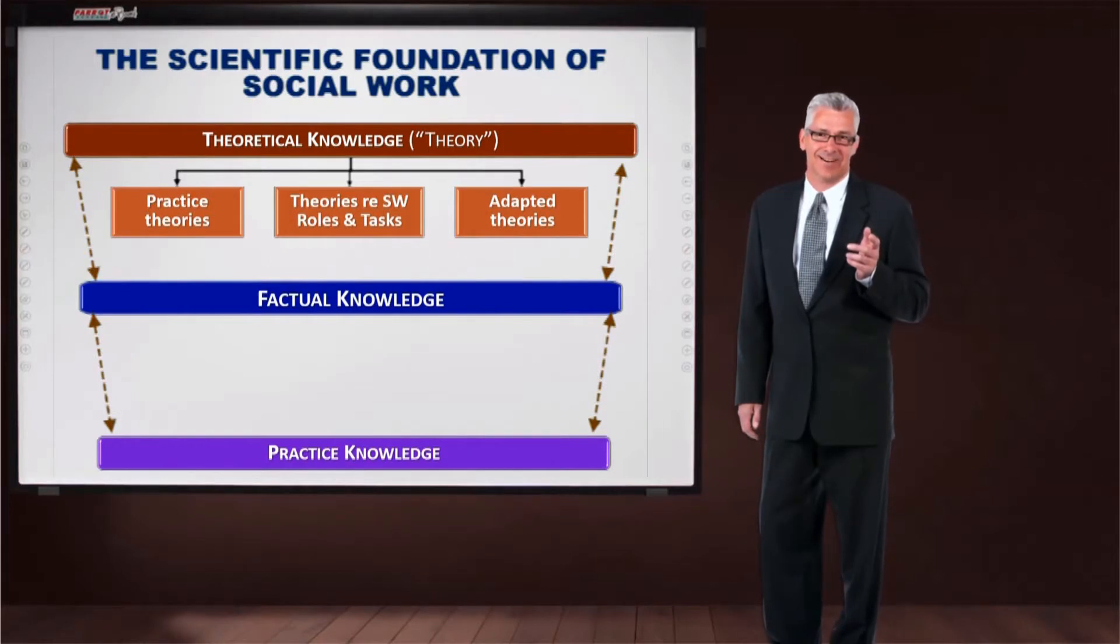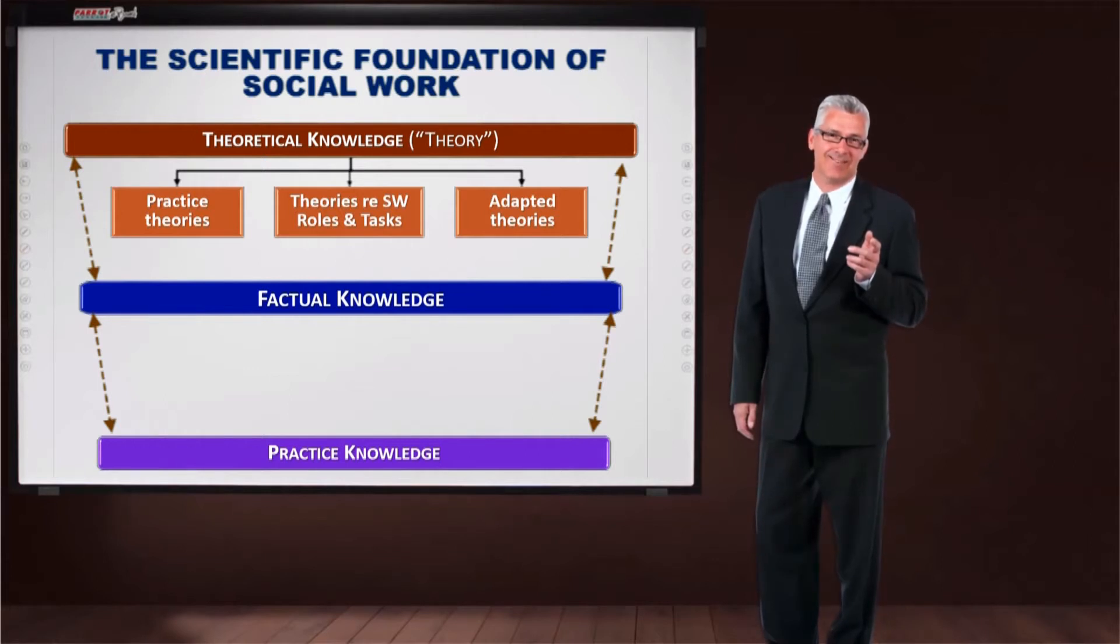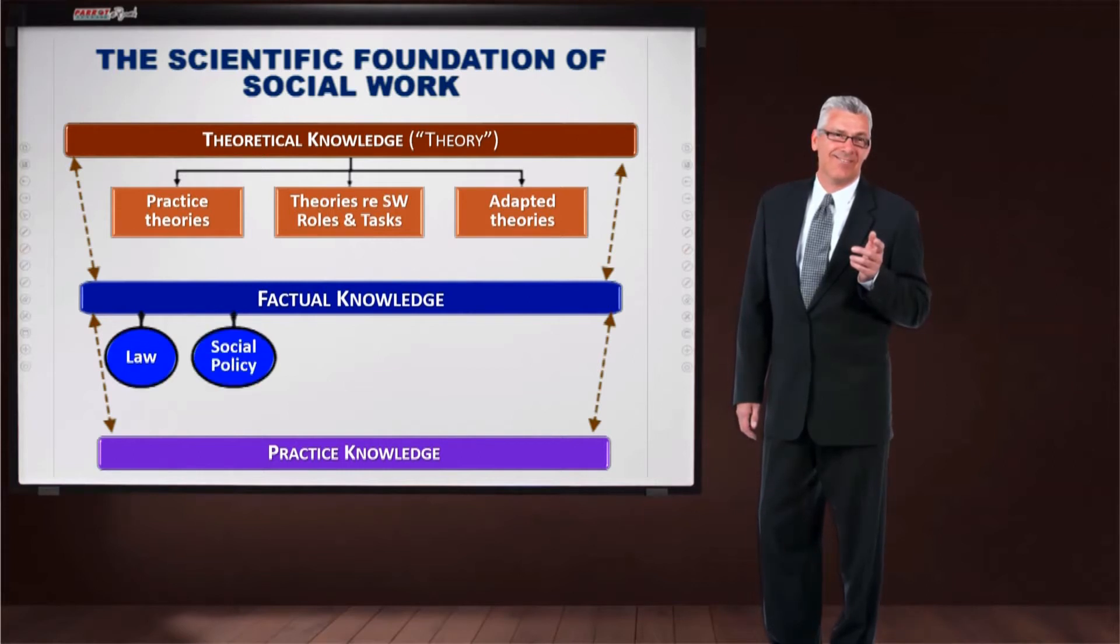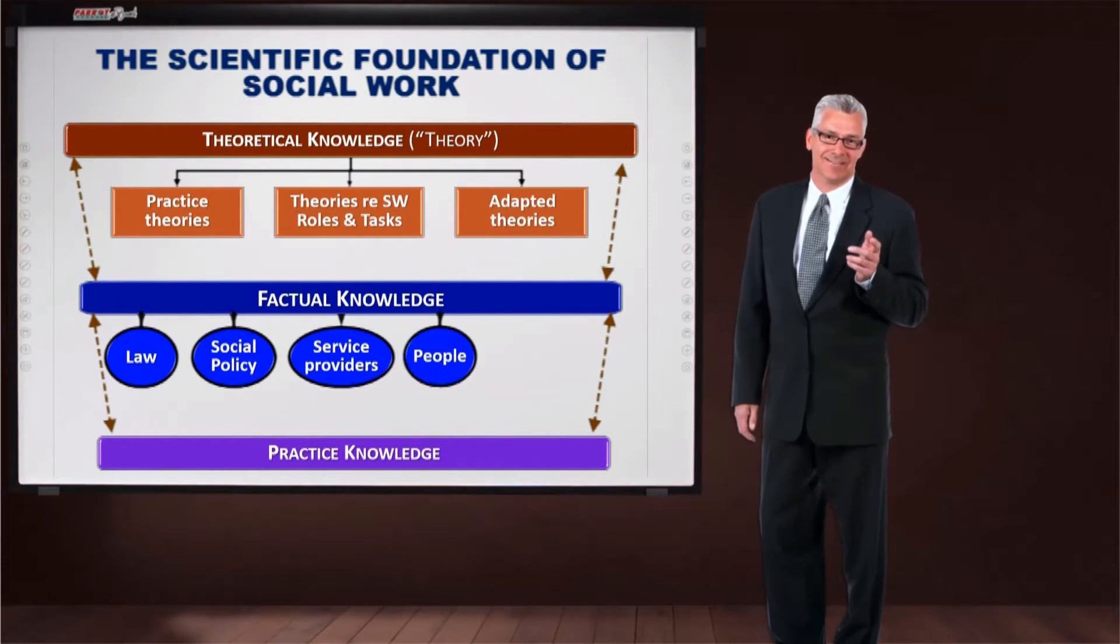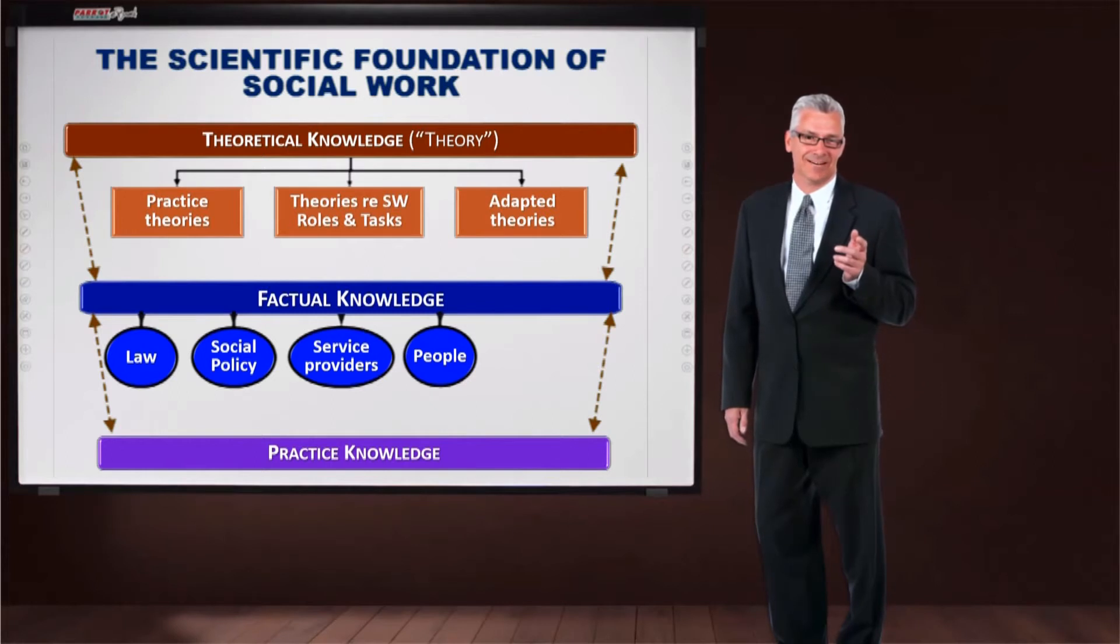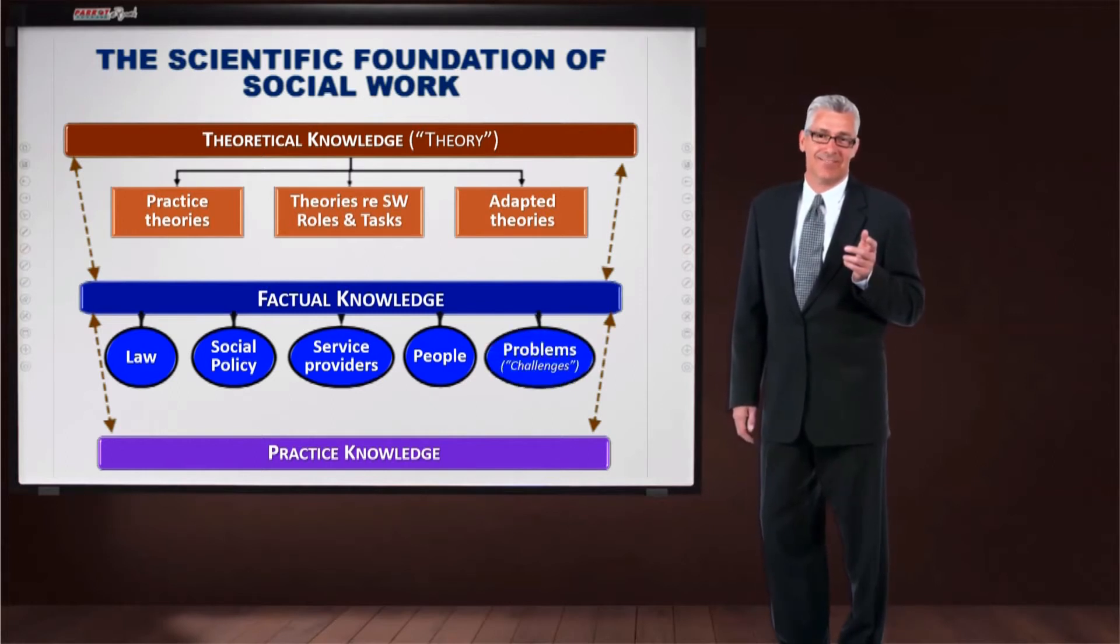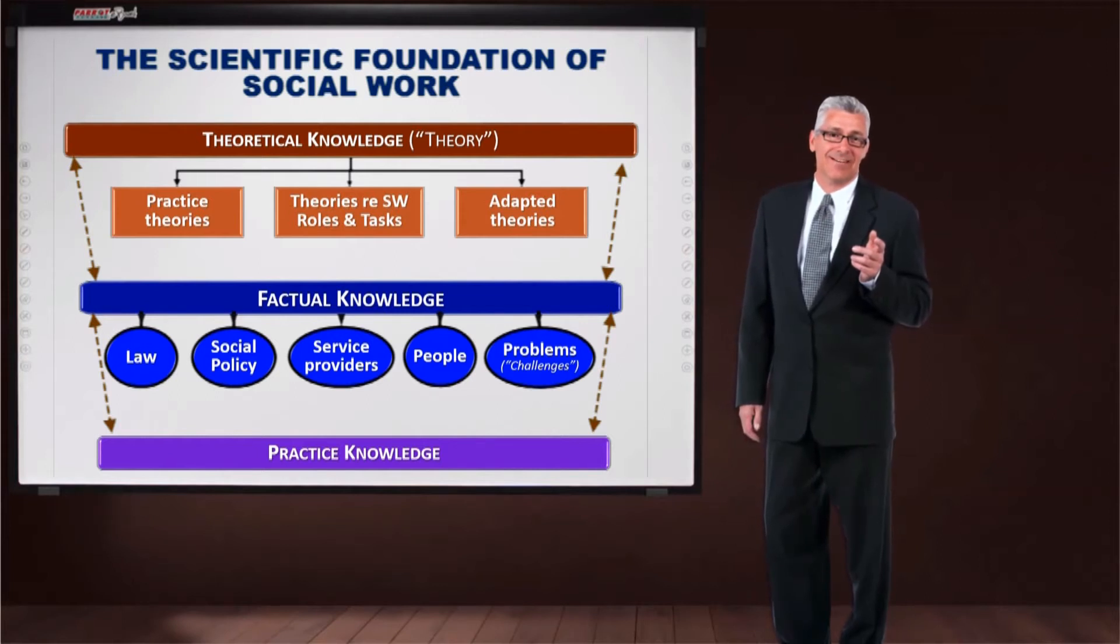The factual knowledge covers all the knowledge we require to function effectively as a social worker in a given practice setting. It could include knowledge of the legal system and laws, the social policies that govern practice, and the nature and services of the agency that employs us. We must, of course, also know the biopsychosocial, cultural and economic dimensions of the individuals, groups and communities we will be working with, as well as the nature of the problems or challenges that they are facing.